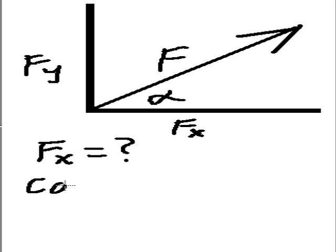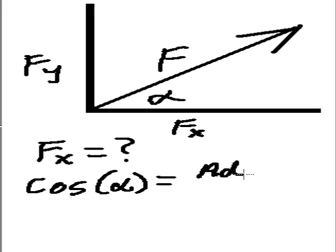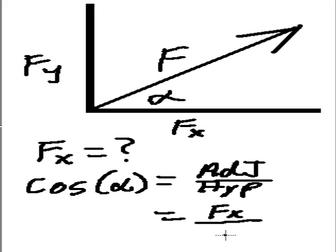We know that cosine of alpha is equal to, how did I say opposite? Adjacent over hypotenuse. But of course, that means f of x over f.